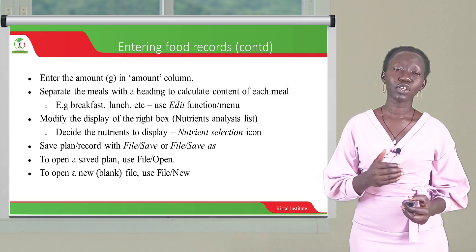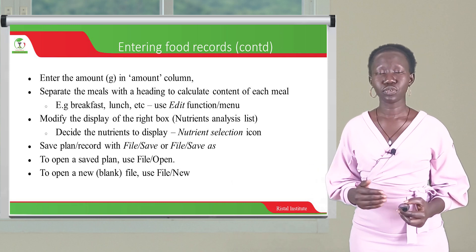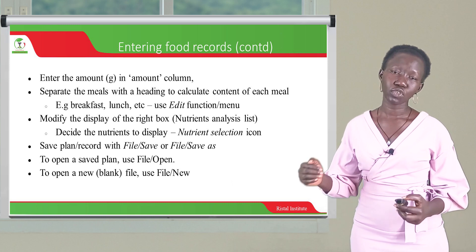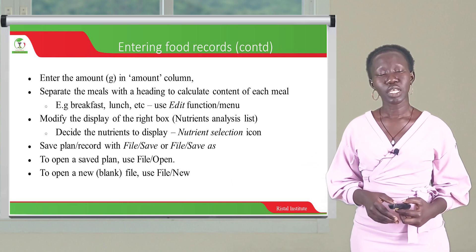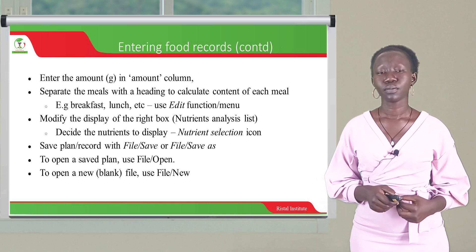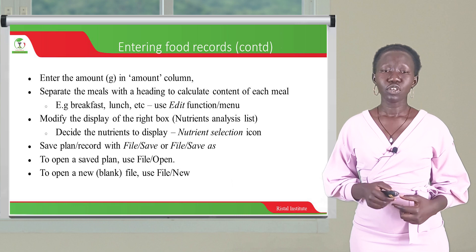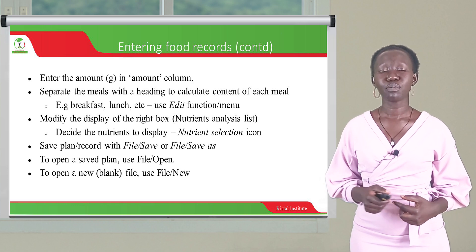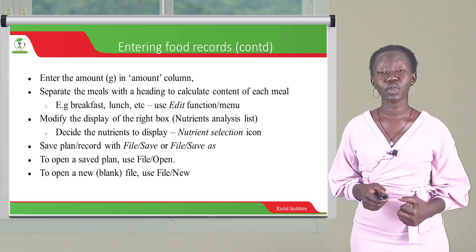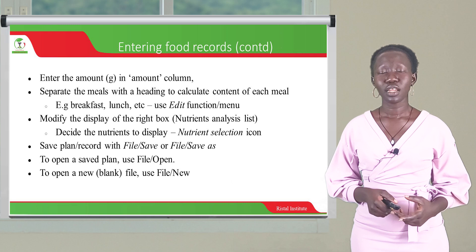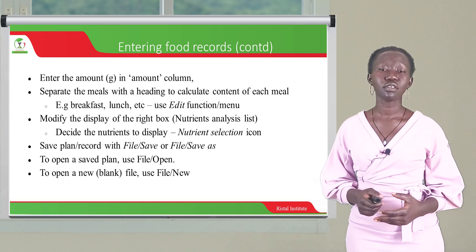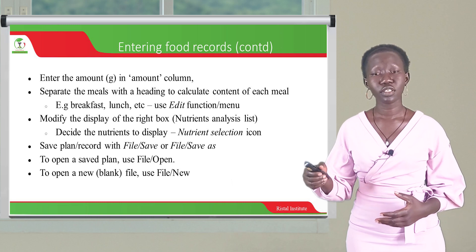To continue, if you want to write down the lunch foods, you separate them with a heading for lunch, then write down all the items consumed during lunch. You can also edit from the edit function. You can modify the display of the right panel — the nutrient analysis list — to decide which nutrients you want to display. If you want to analyze carbohydrate content, fat content, or protein content, you can select from the nutrient selection icon.